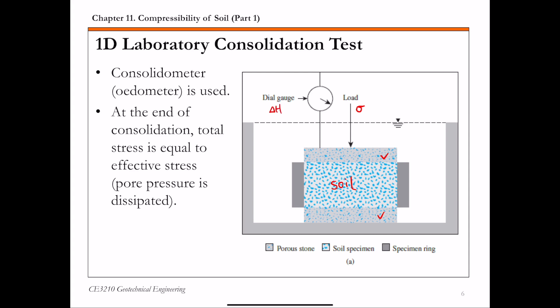So for each loading, to allow the pore pressure to dissipate, to allow the drainage to complete, so this load is typically kept at 24 hours and until the next load is applied. During the entire process, the specimen is placed under the water table. So the soil is fully saturated. So at the end of the consolidation, the total stress sigma is equal to the effective stress in the specimen because all the pore pressure is dissipated when the consolidation is completed.